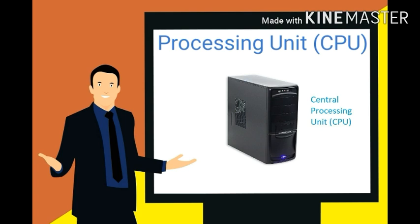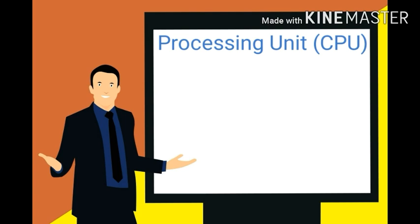CPU ही जो हमारे सारे काम को perform करता है। हम जो भी input देते हैं keyboard या mouse के through, उसको वो process करके हमें output device के through उसका result show करता है। जैसे हमारे brain में अलग-अलग parts होते हैं, वैसे ही CPU के अंदर अलग-अलग काम को perform करने के लिए अलग-अलग parts होते हैं।